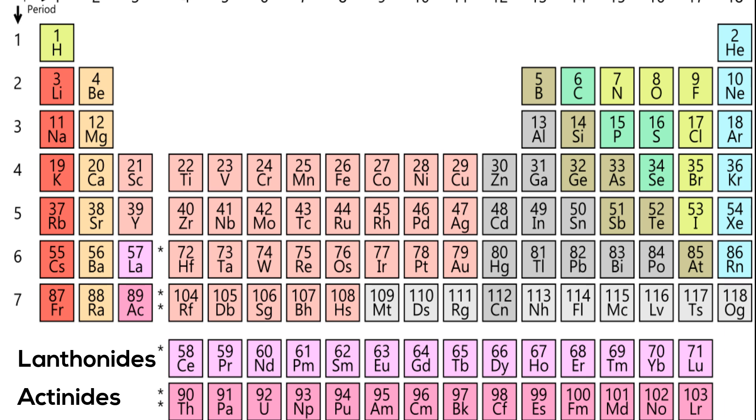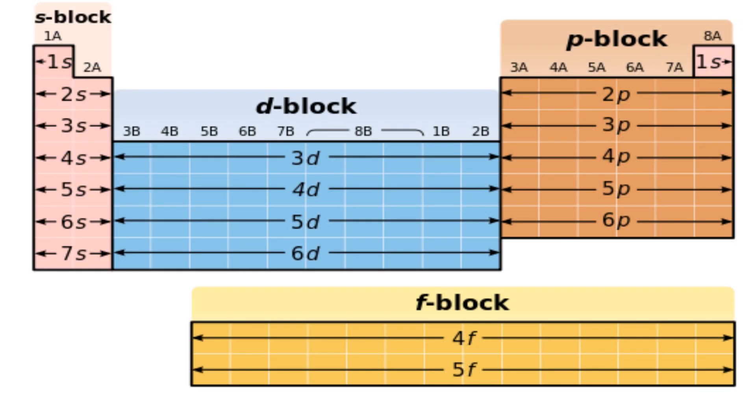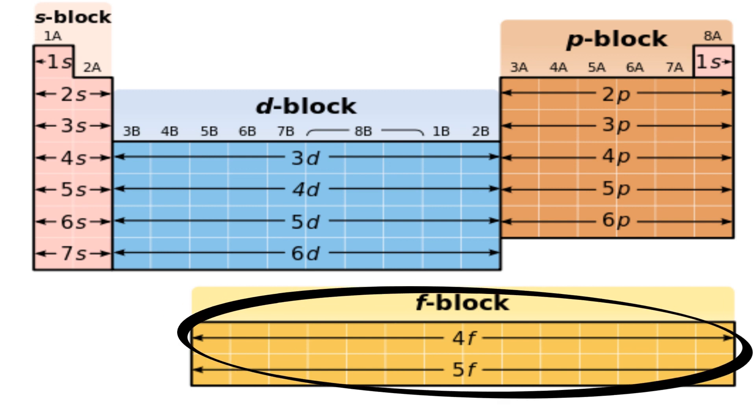These two rows are produced when electrons are being added to the F orbitals. Therefore this block of elements are referred to as F block. The actinides make up the 5F series.